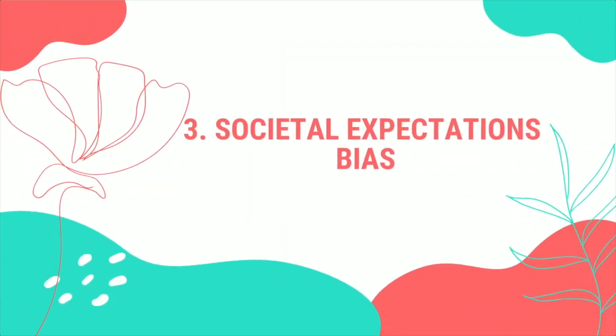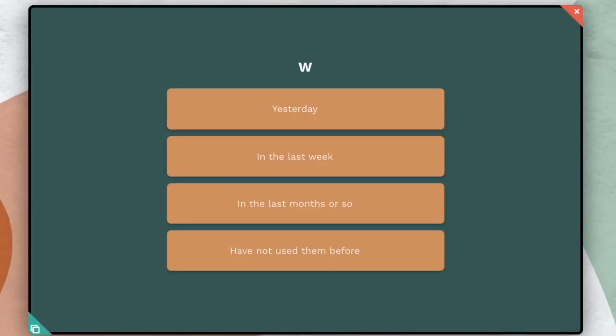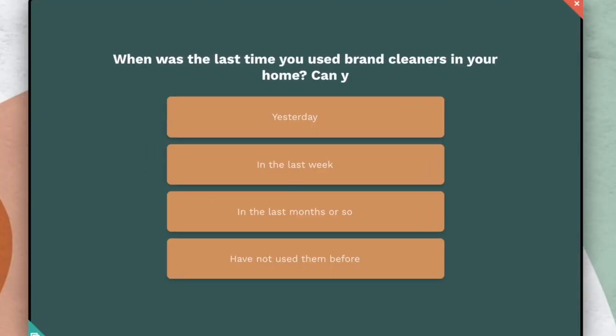Number three: societal expectations bias. We all feel the pressure that society puts on us in our personal and professional lives — we feel the need to act, think, and behave in a certain way to fit a societal mold, which is not always a bad thing. But it could be very bad when you are trying to collect relevant data and honest customer opinions. If you ask, 'Do you think it's important to use natural cleaners in your home?' of course everyone is going to say yes. To eliminate this bias, ask more specific questions using past tense, like 'When was the last time you used brand cleaners in your home, and can you tell us what they were?'